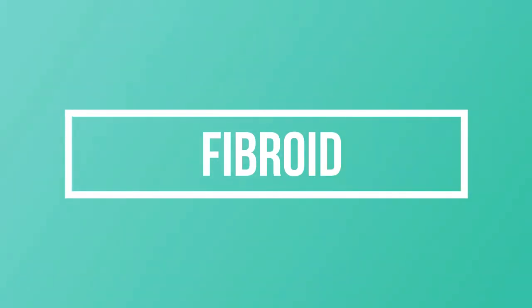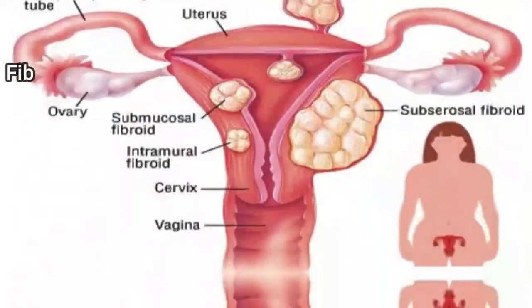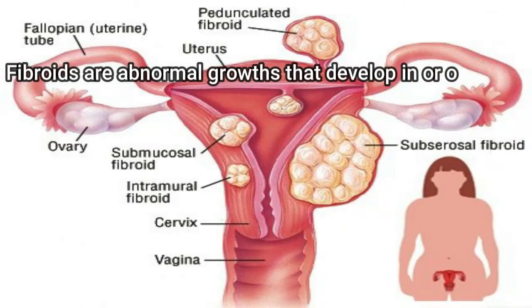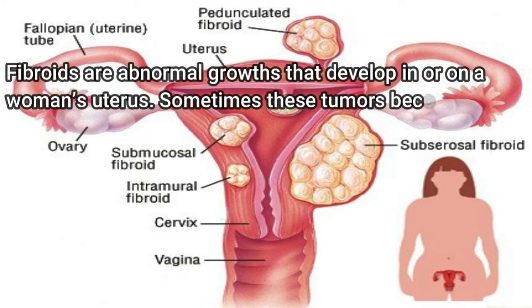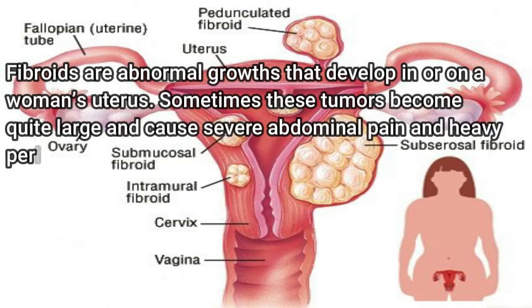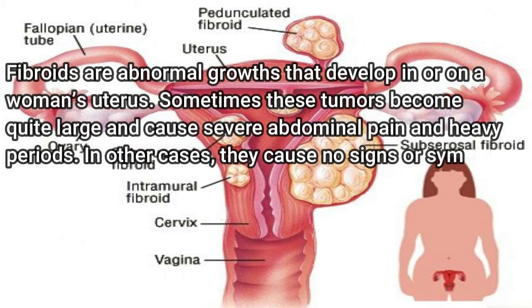Today's topic: fibroids. Fibroids are abnormal growths that develop in or on a woman's uterus. Sometimes these tumors become quite large and cause severe abdominal pain and heavy periods. In other cases, they cause no signs or symptoms at all.